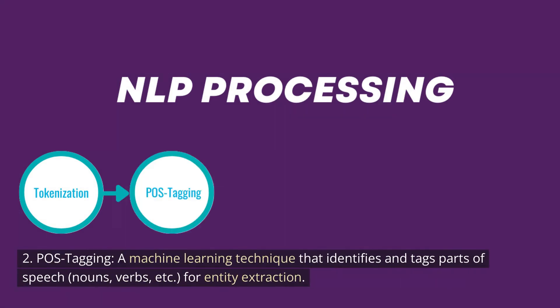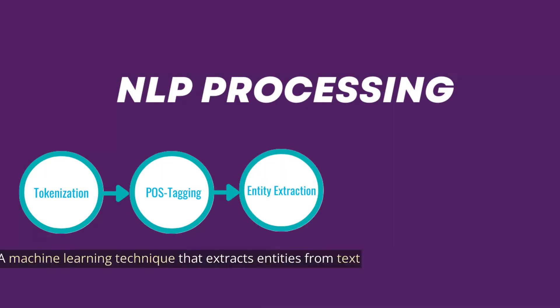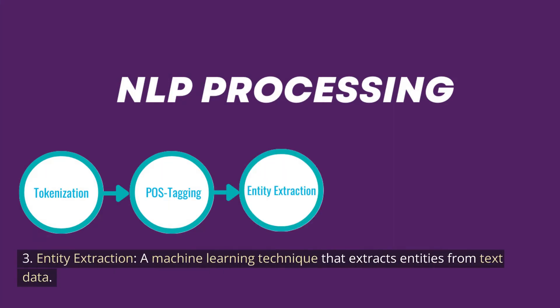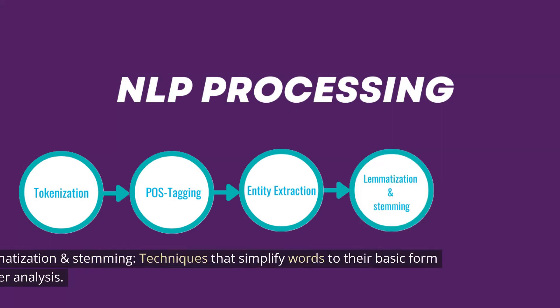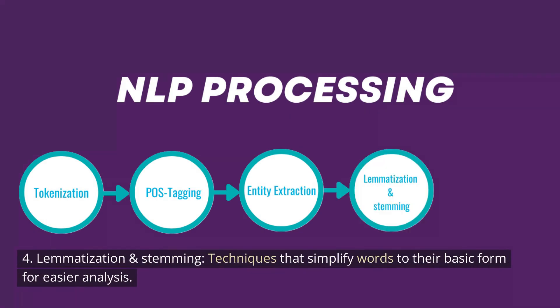POS tagging identifies nouns, verbs, etc., for entity extraction. 3. Entity extraction, a machine learning technique that extracts entities from text data. 4. Lemmatization and stemming, techniques that simplify words to their basic form for easier analysis.